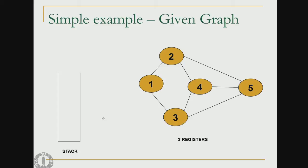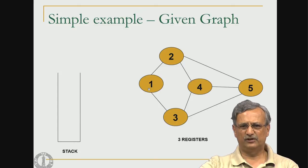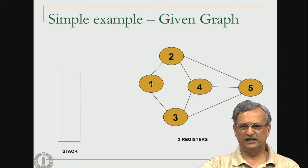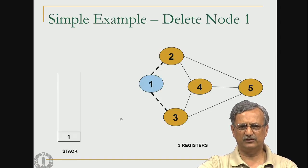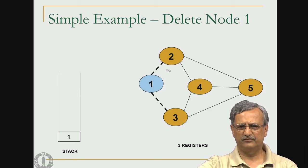Consider a simple example with an empty stack, a small interference graph, and three available registers, meaning we look for nodes of degree two or less. Node 1 has degree 2 and is eligible; nodes 2, 3, 4, and 5 all have degree 3. So we remove node 1, placing it on the stack and removing its two edges. After this, nodes 2 and 3 each have only two edges, making either eligible for the next reduction step.